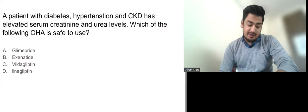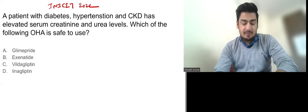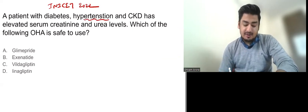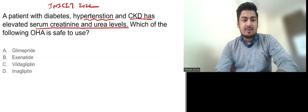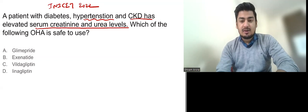This is the second question which again came in INESET 2022. The question reads: a patient with diabetes, hypertension and CKD has elevated serum creatinine and urea levels. Which of the following OHA is safe to use?